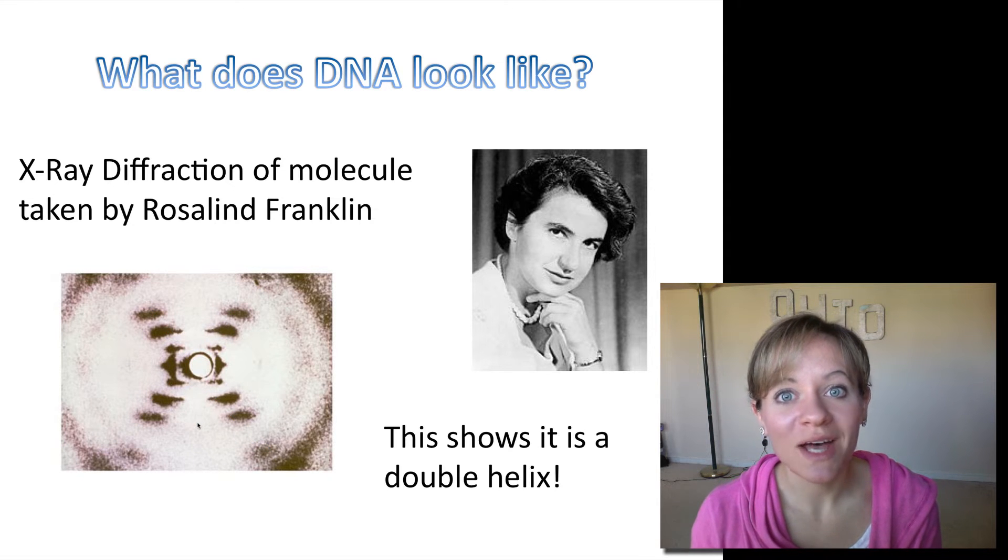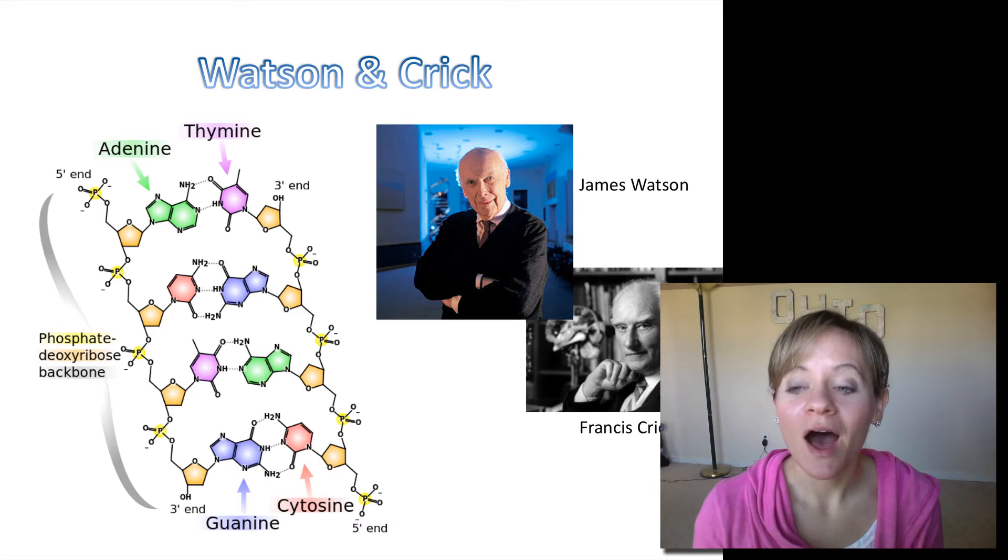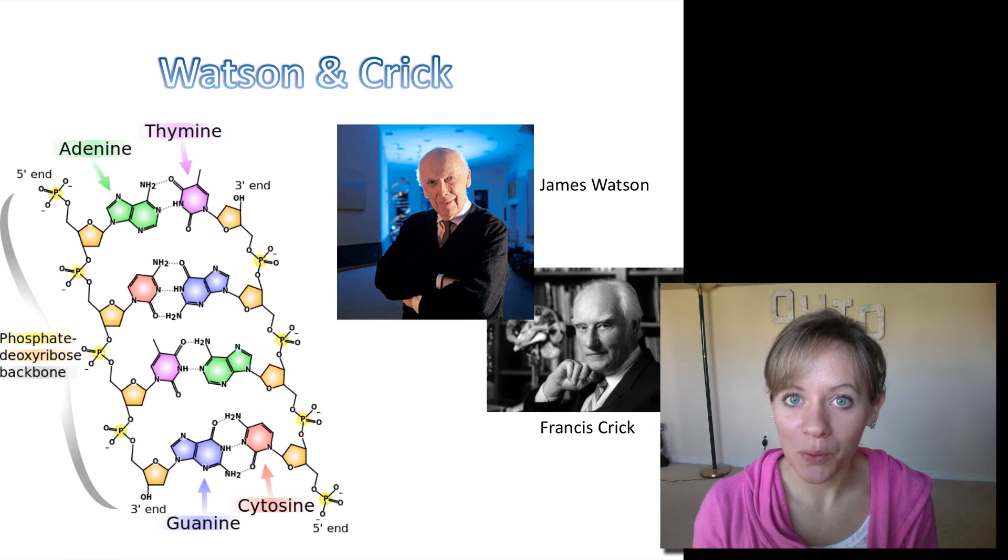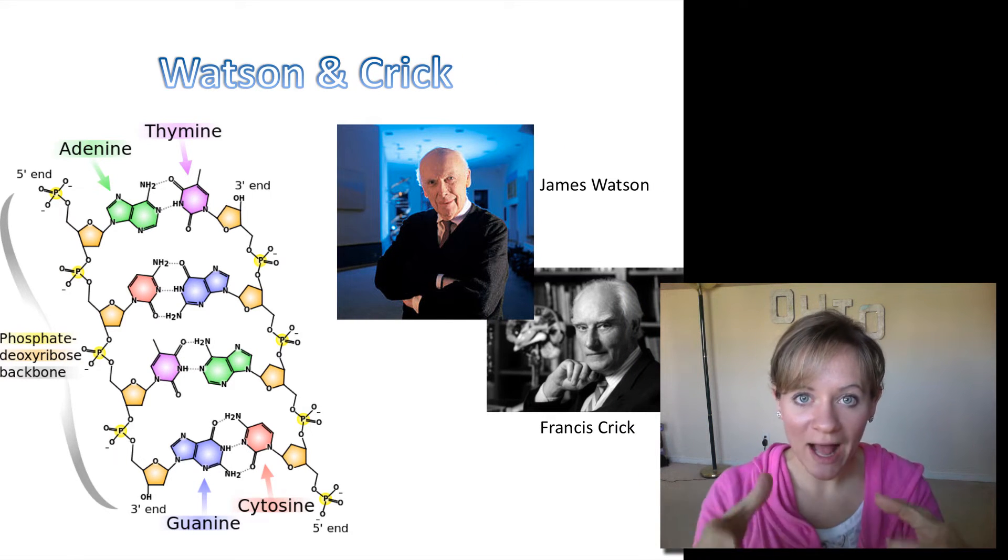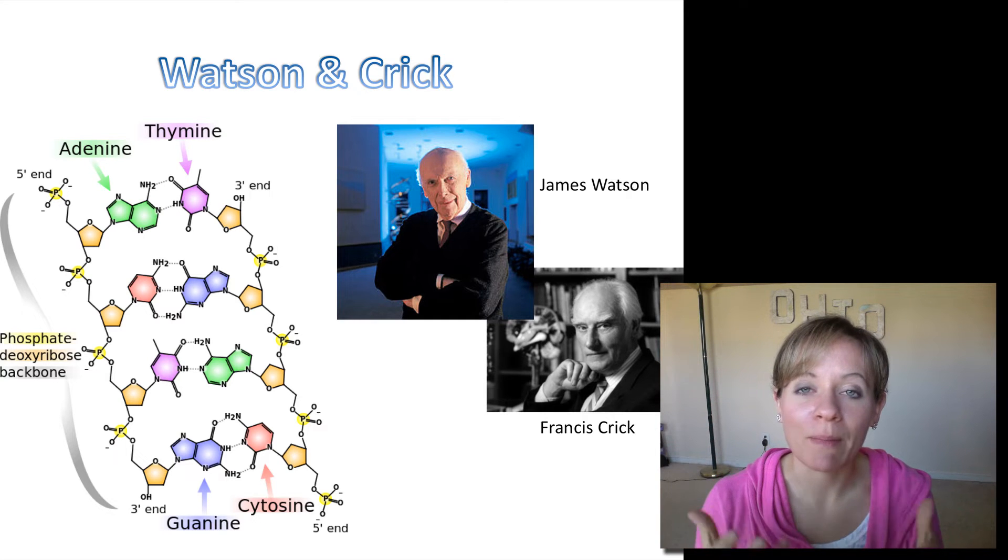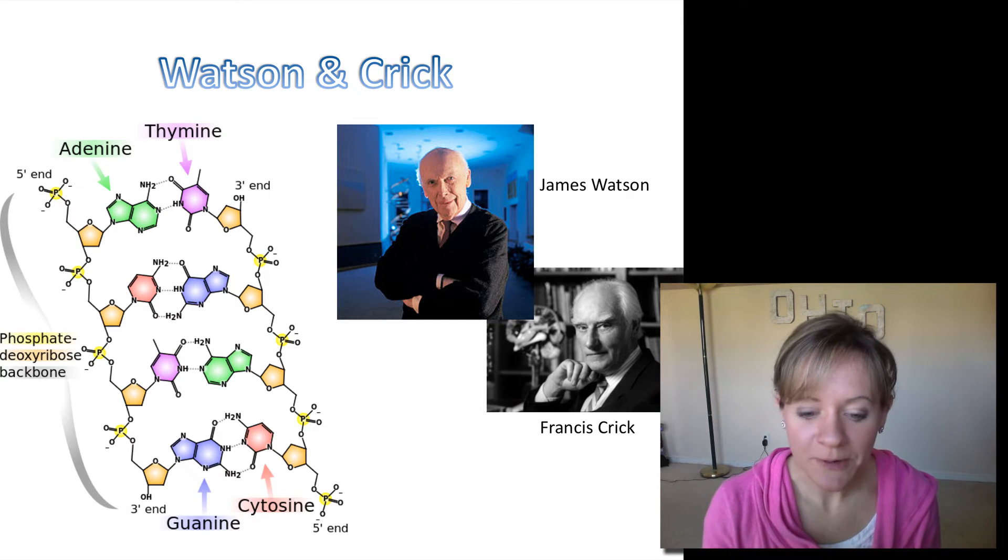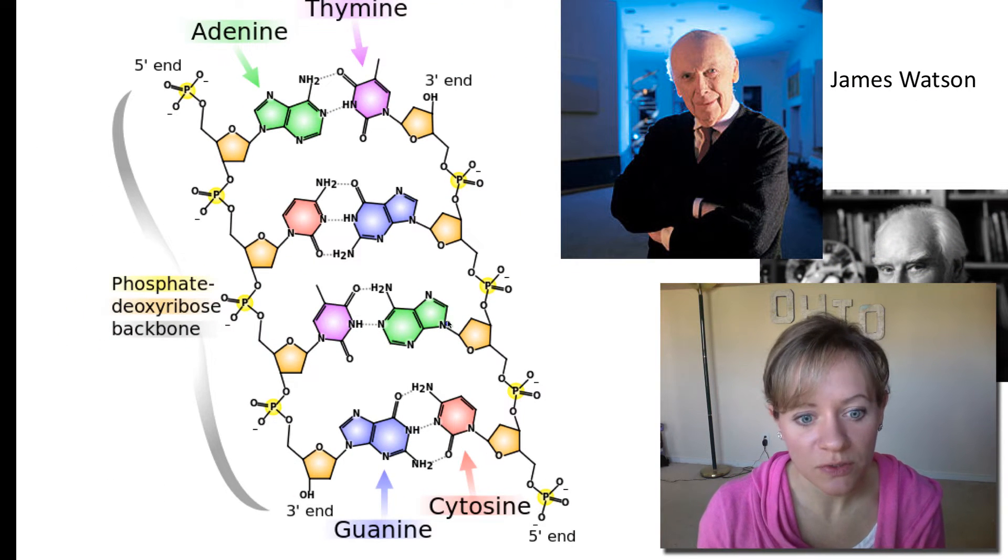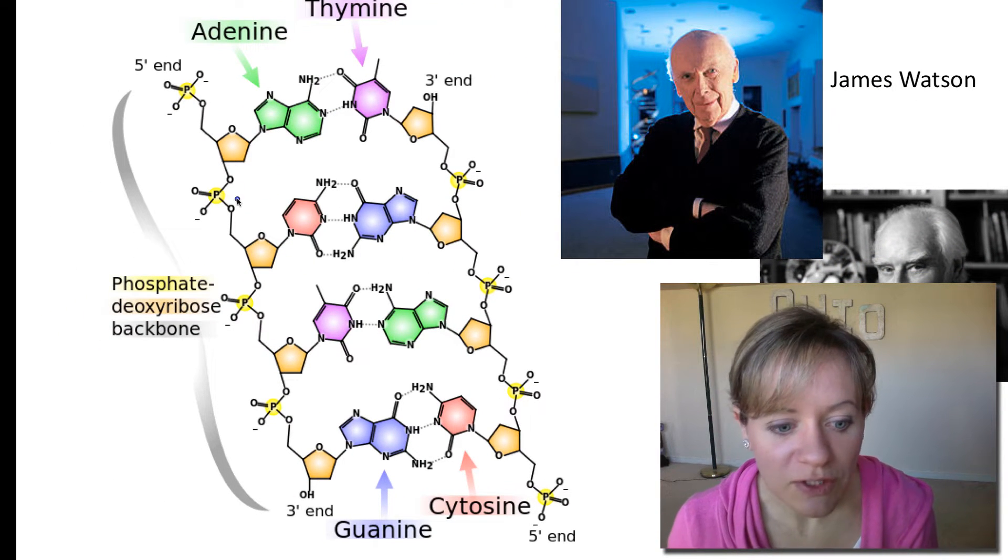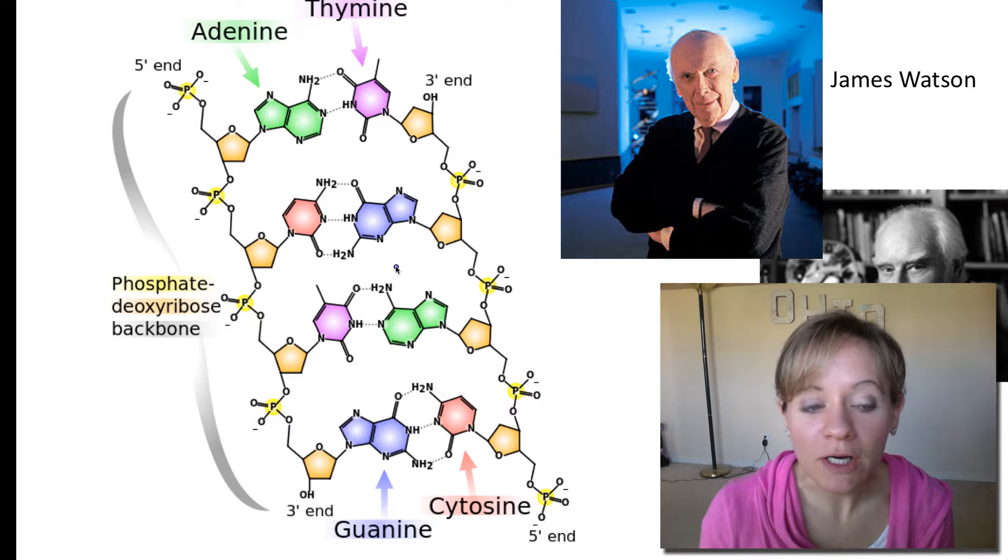So this photograph was given to two more scientists who you may have heard of, James Watson and Francis Crick. And they took this photograph, and they decided to put together an actual physical model in their lab about what this DNA molecule looks like. And so this is what they came up with, and I do want you to draw this in your notes. Maybe not every single line or detail, but I want you to understand this very important structure.